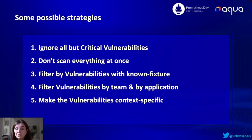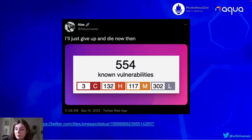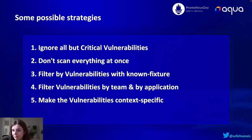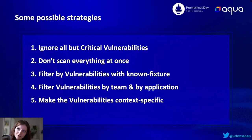Filter by known vulnerabilities that have a fix available. If you have over 500 vulnerabilities but most of them don't have a fix available yet, you don't have to pay attention to them. Then filter vulnerabilities by team and by application and make vulnerabilities context-specific. There's no need for one person to look at all the vulnerabilities and all of the security issues by themselves at once — you can be responsible for a specific part, for a specific type of security scan, not everything.